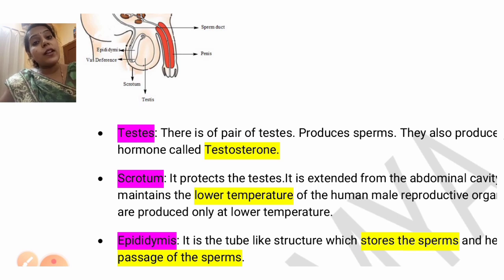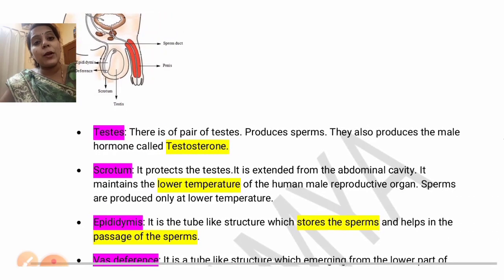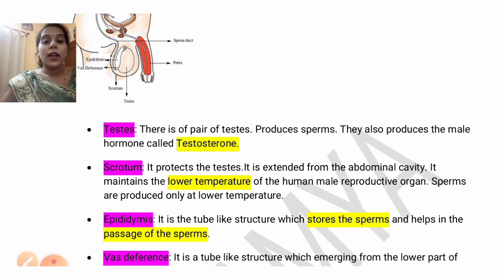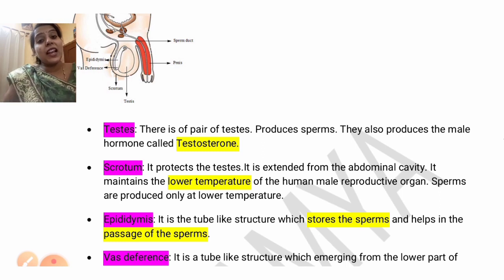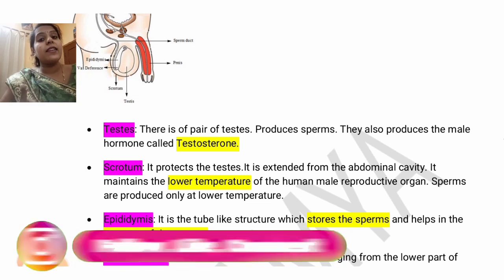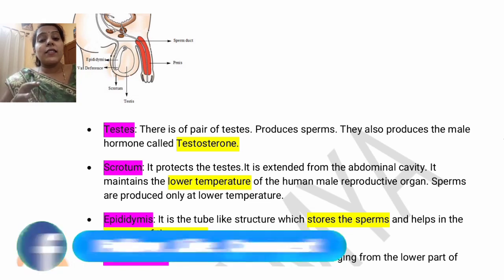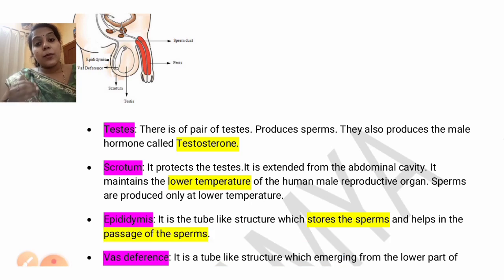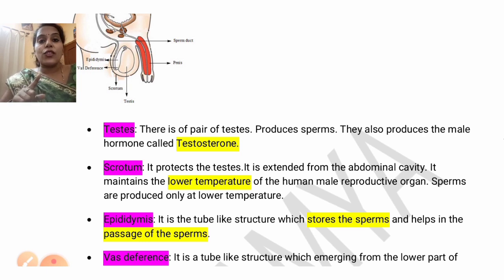What is meant by testes? There are two testes in the human male reproductive system — a pair of testes, also called testicles. What is the use of testes? Testes will produce the sperm. It is also helpful for the production or the secretion of a hormone called testosterone.